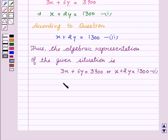And, the second equation is X plus 2Y equal to Rs. 1300. So, this is our second equation.